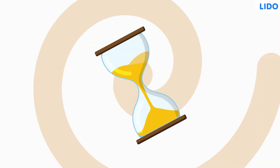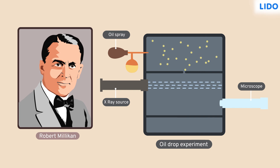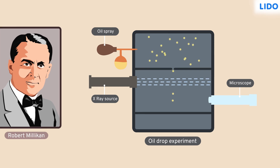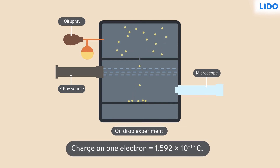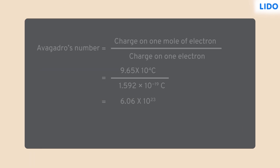After a few years, another scientist, Millikan, conducted an oil drop experiment in which the charge on a single electron was calculated. And finally, the Avogadro's number or mole constant was found by dividing the charge on one mole of electrons by the charge on one electron.